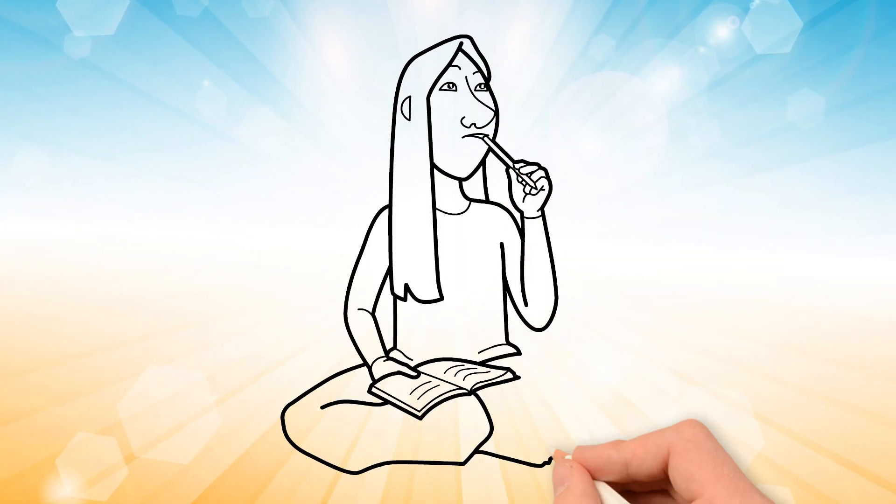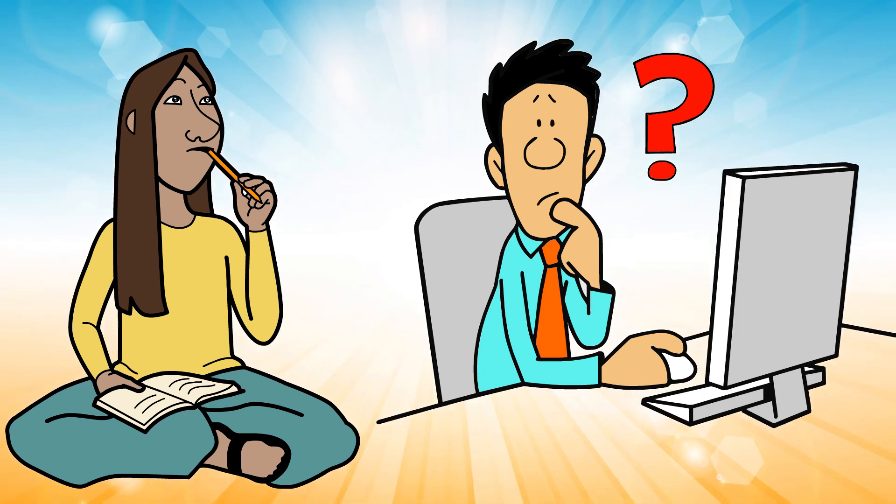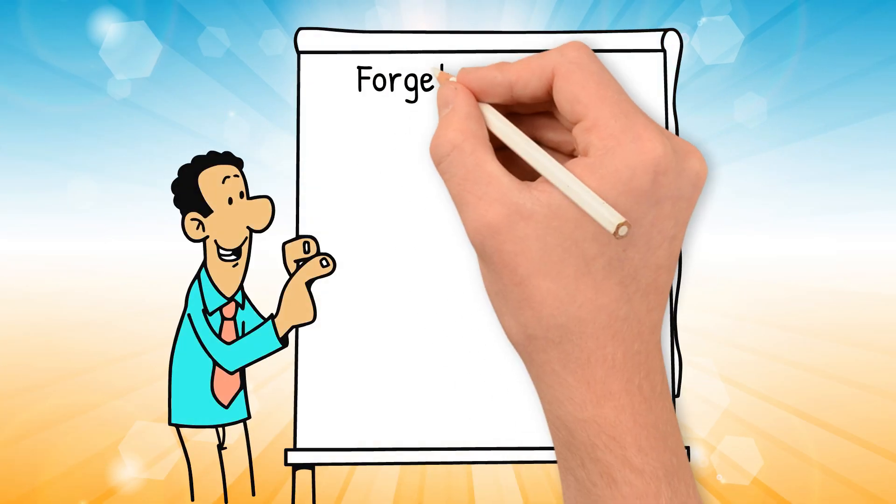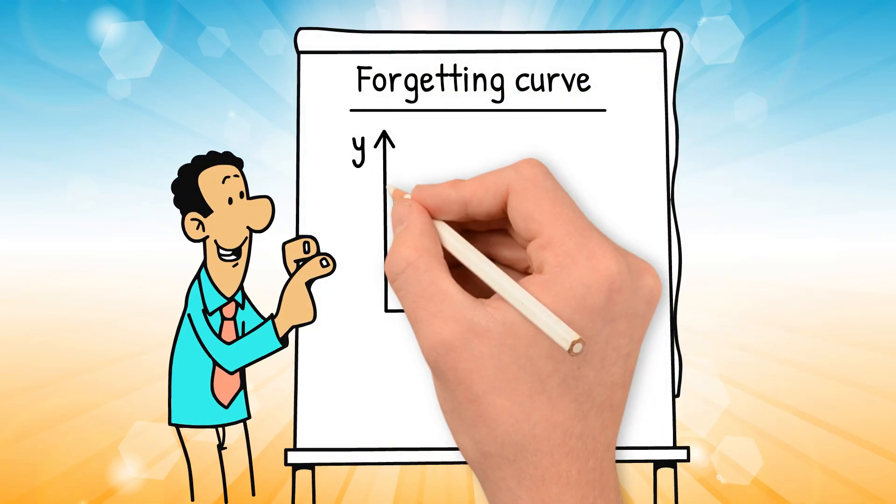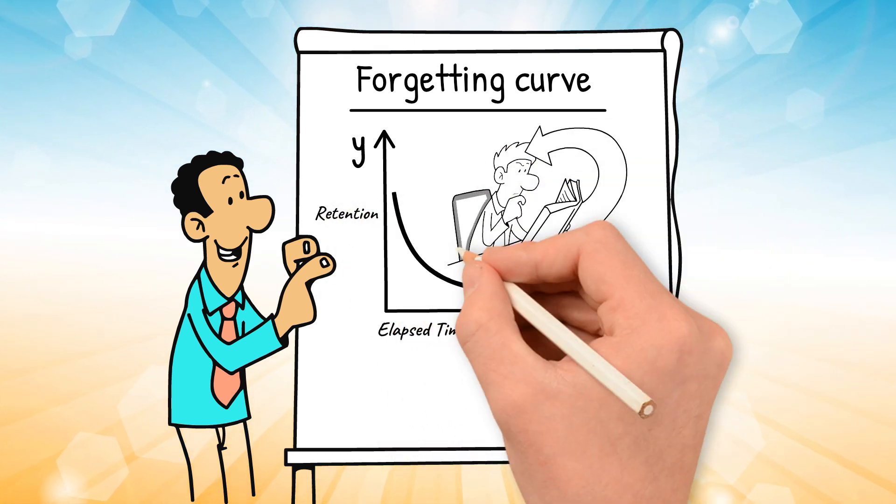Have you ever studied or read something and not been able to remember it the next day? Psychologists call this the forgetting curve. This forgetting curve refers to the rate at which information is forgotten after it is learned.